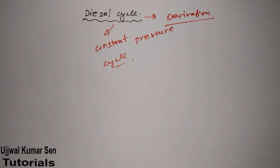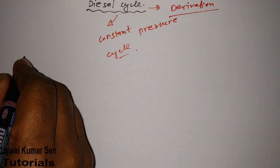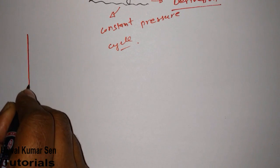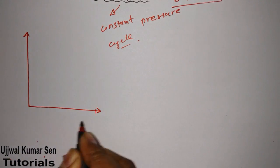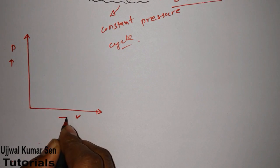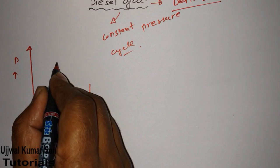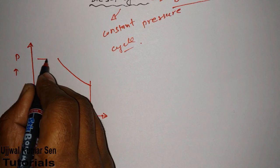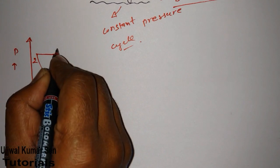The derivation is almost entirely based on the diagram. First, let's understand the PV diagram, then the TS diagram, and then we'll go through each process in the cycle. Every cycle consists of different processes, and in the case of the Diesel cycle, we are drawing P for pressure and V for volume.